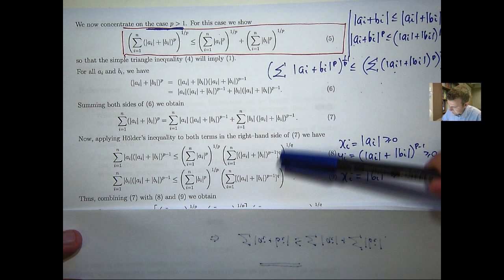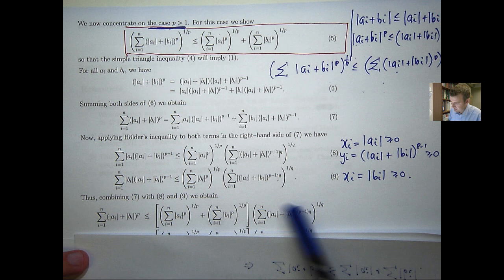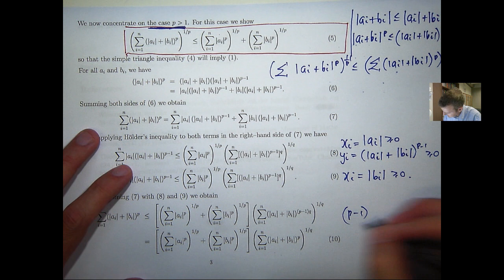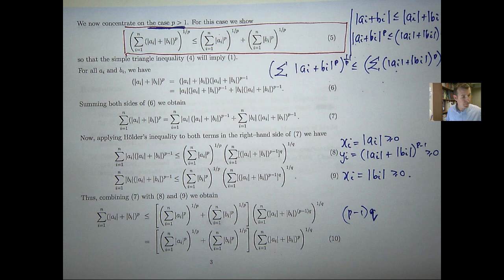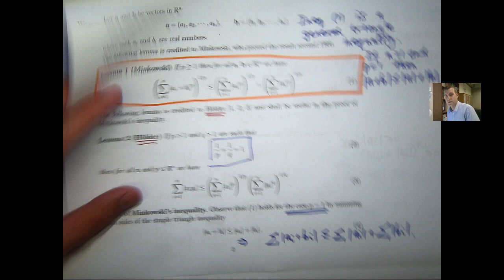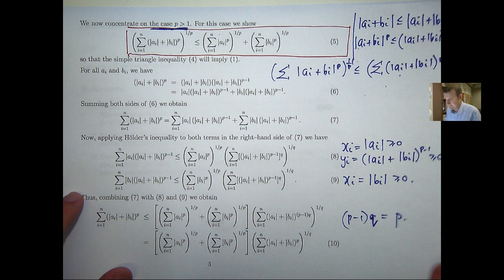Now notice we've got a common factor, so we can take that common factor out. And what we can do then to this bottom line is just rearrange, so take this to the other side. But before we do that, we'll do that in a minute. You can see here what's happened is the power has been simplified. So (p minus 1) times q is just equal to p because of these conditions on p and q in Holder's inequality. So you simplify the power and you get this. Then let's bring this to the other side.